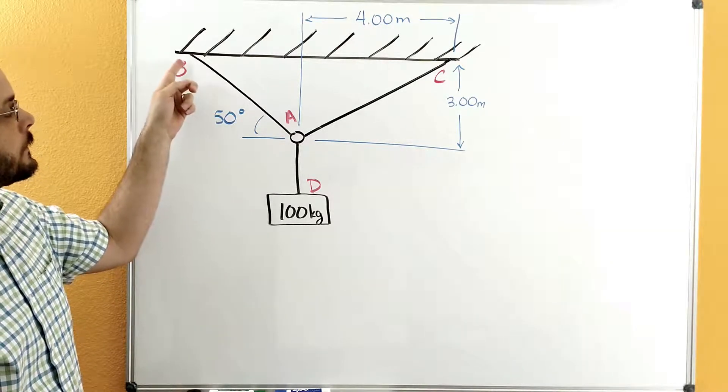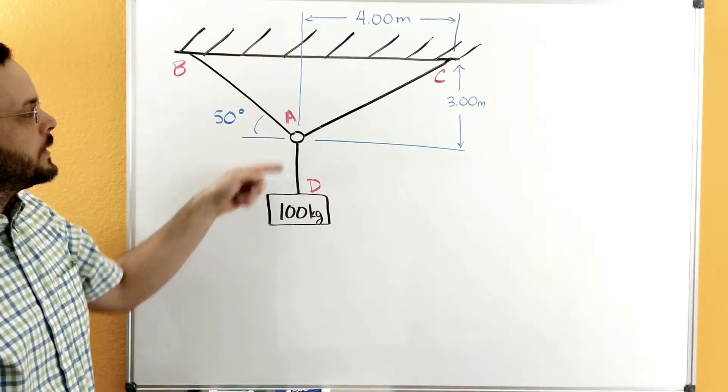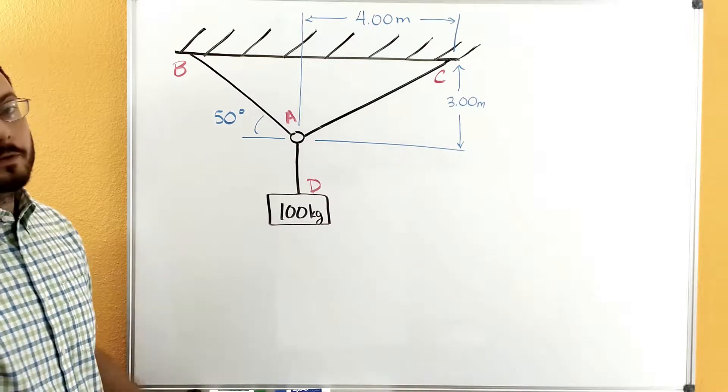which is supported by three cables. We have AB, which is going up to the ceiling. We have AC, which is going up to the ceiling. And we have AD, which connects between this ring and the 100 kilogram mass here.